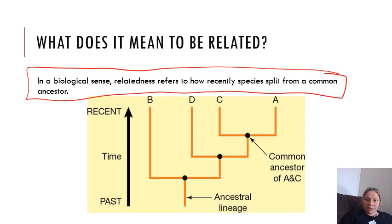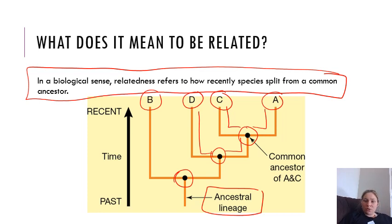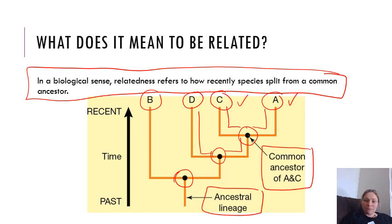We can see on this chart here we've got species A, C, D, and B. They've all diverged from a common ancestor at different points. B has diverged earlier, before the divergence which led to D, and then subsequently the divergence which led to C and A. So C and A are the most closely related because they've got the most recent common ancestor. D is the most closely related to B.